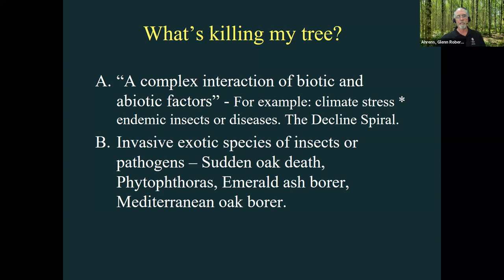Emerald ash borer, which has arrived in Oregon, is an exotic insect threatening our ash. The Mediterranean oak borer, not yet a big issue in Oregon but showing up in California, is starting to appear. Those kinds of things can be fairly quick tree killers — it's not such a complex interaction. We want to learn about all of these things.